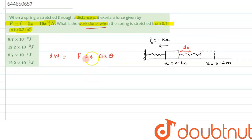So for complete work done from 0.1 to 0.2 meter, we have to integrate the given scenario. As we can see, when we start stretching the block with an external force, the more we start moving towards right, the harder it will be to pull the block.